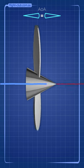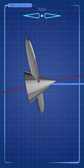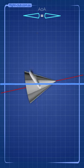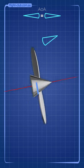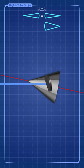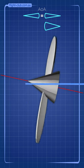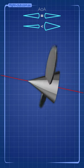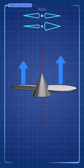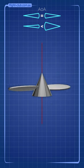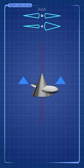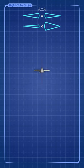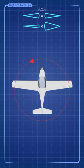But when the aeroplane pitches up, like during a take-off run, the angle of attack of the down-going blade is greater than the angle of attack of the up-going blade. This means that the right side of the propeller disc creates more thrust than the left side and causes the aeroplane to want to turn to the left.